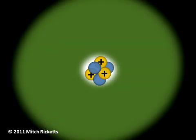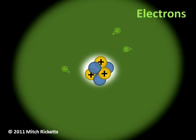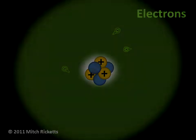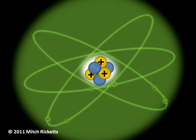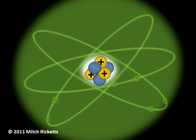The nucleus is surrounded by a cloud of electrons, tiny particles that have a negative electrical charge. Here we see a highly simplified representation of electrons swarming around the nucleus.